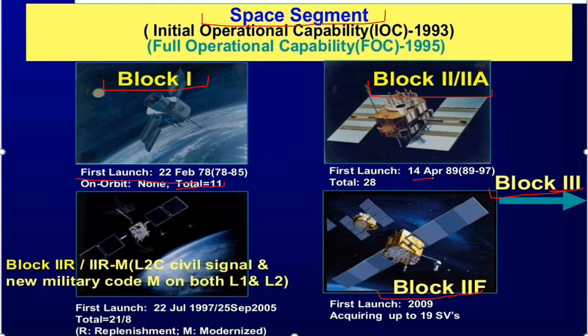Block 2R and 2RM, which provided L2C Civil Signal and New Military Code M on both L1 and L2 signals, first launched 22 July 1997 with a total of 21 satellites, and 8 other space satellites in Block 2RM, where R is replenishment and modern. Block 2F was launched in 2009.